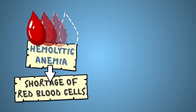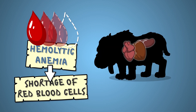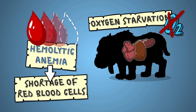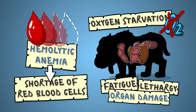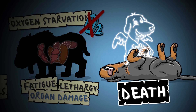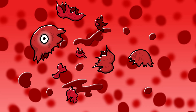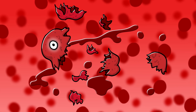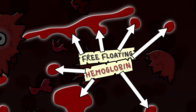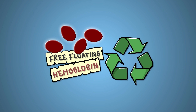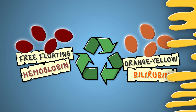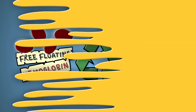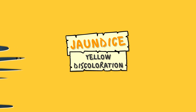The shortage of red blood cells, if severe, will starve the organs and tissues of oxygen, causing fatigue, shortness of breath, organ damage and eventually death. The debris of red blood cells, which consists mainly of hemoglobin molecules, gets in part processed and reused with the orange-yellowish bilirubin as the intermediary product. This tsunami of bilirubin will discolor the tissues, resulting in jaundice.